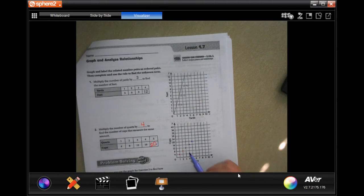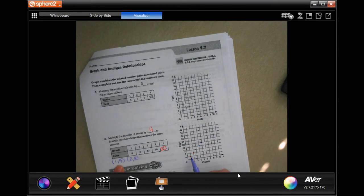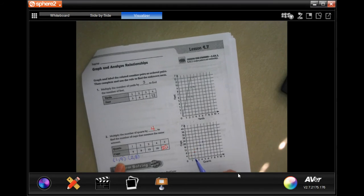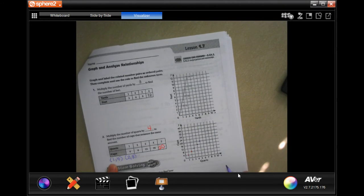They want you to label those, so they want you to write the coordinates - one-four, two-eight - above these points. My markers are too fat to do that, it would just look like a hot mess, but you should write these above the points.